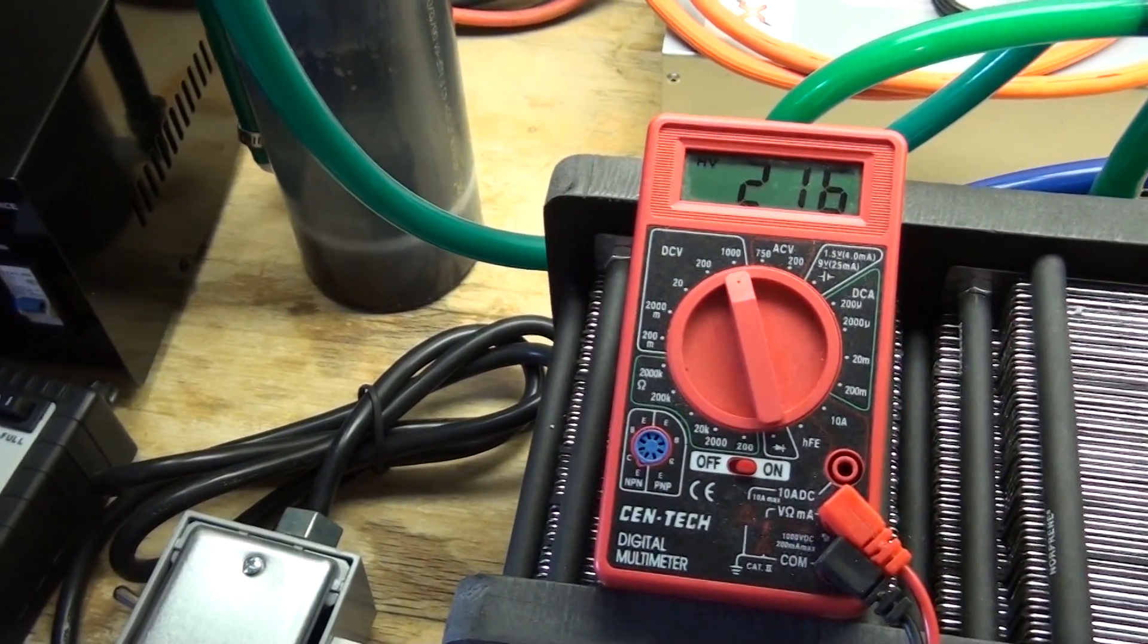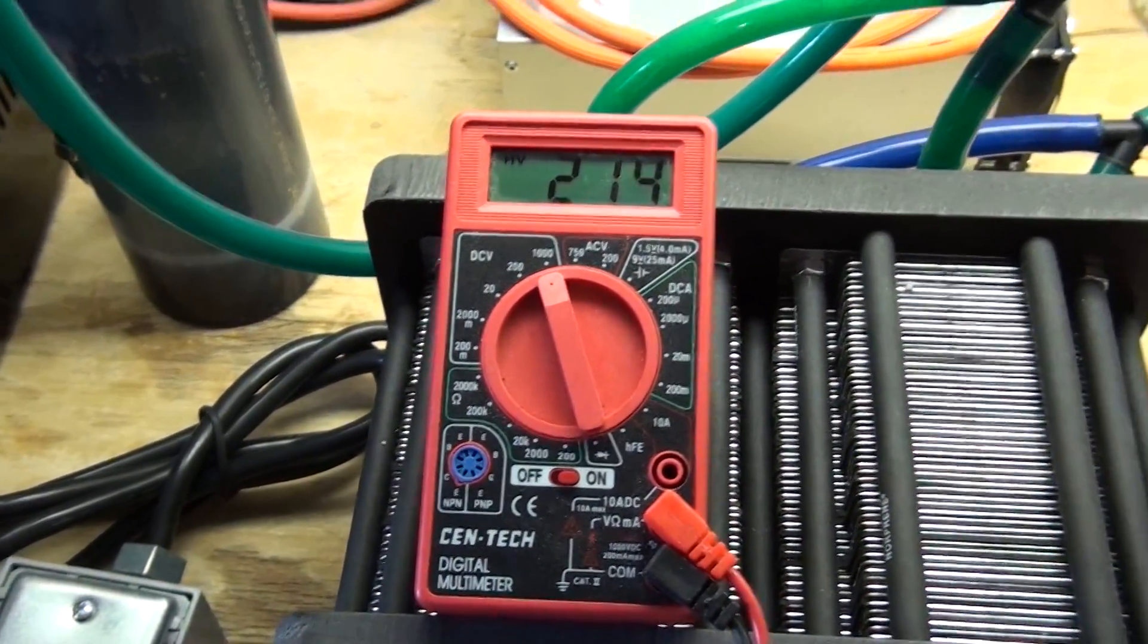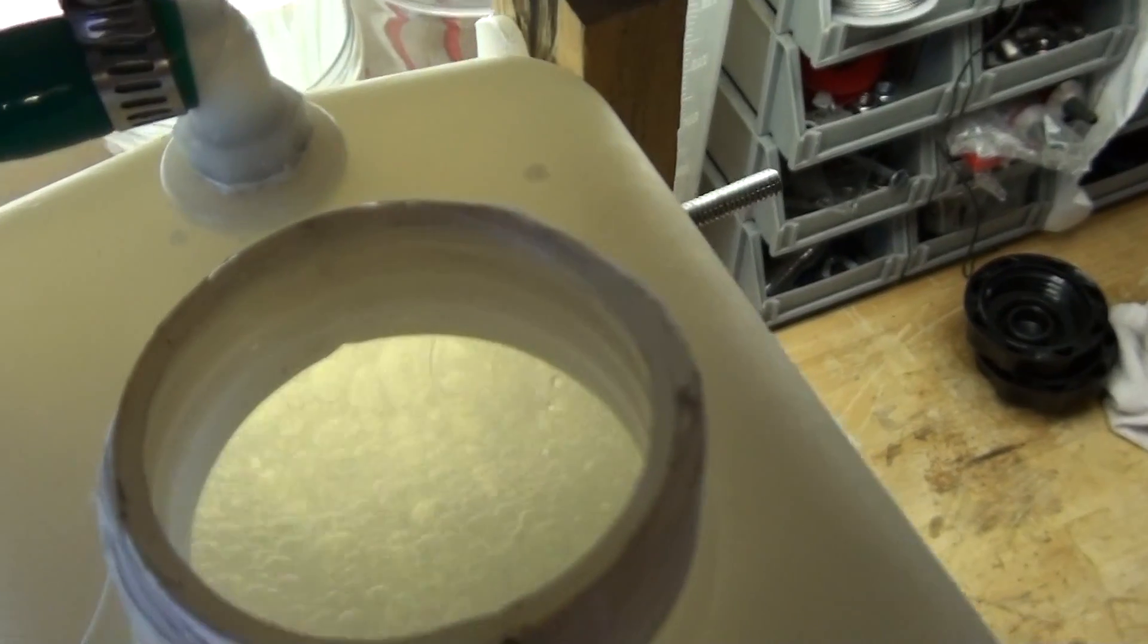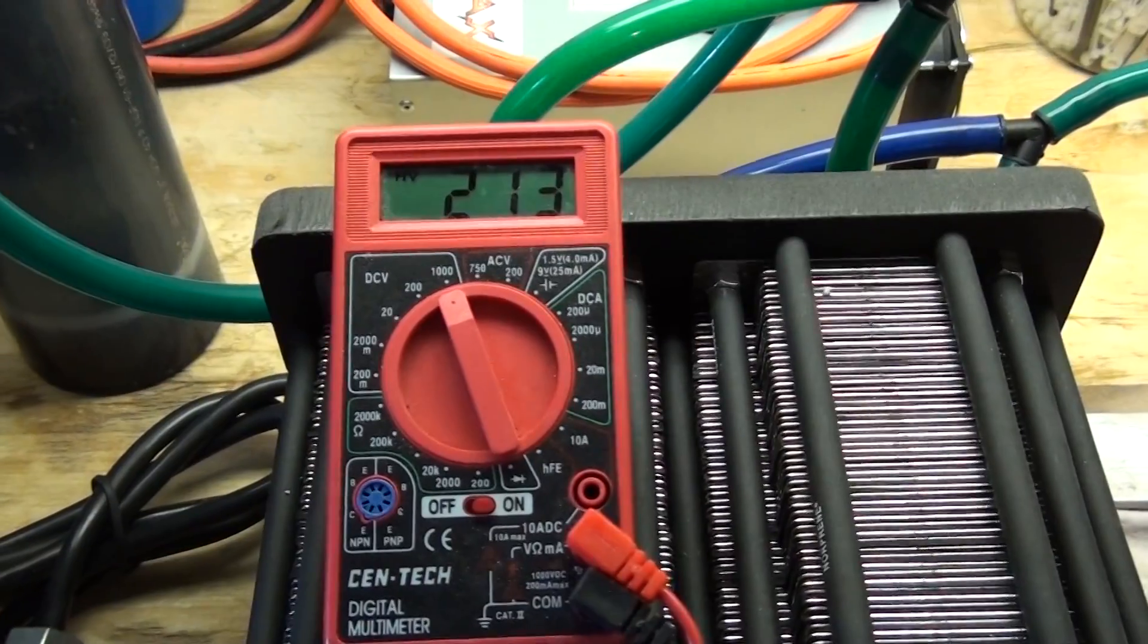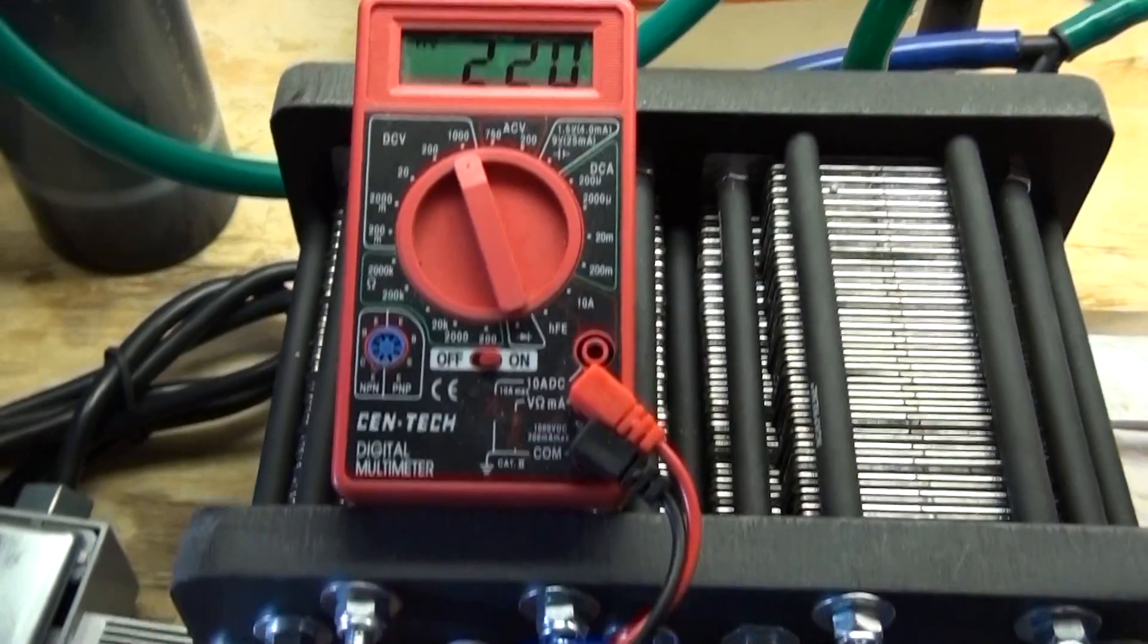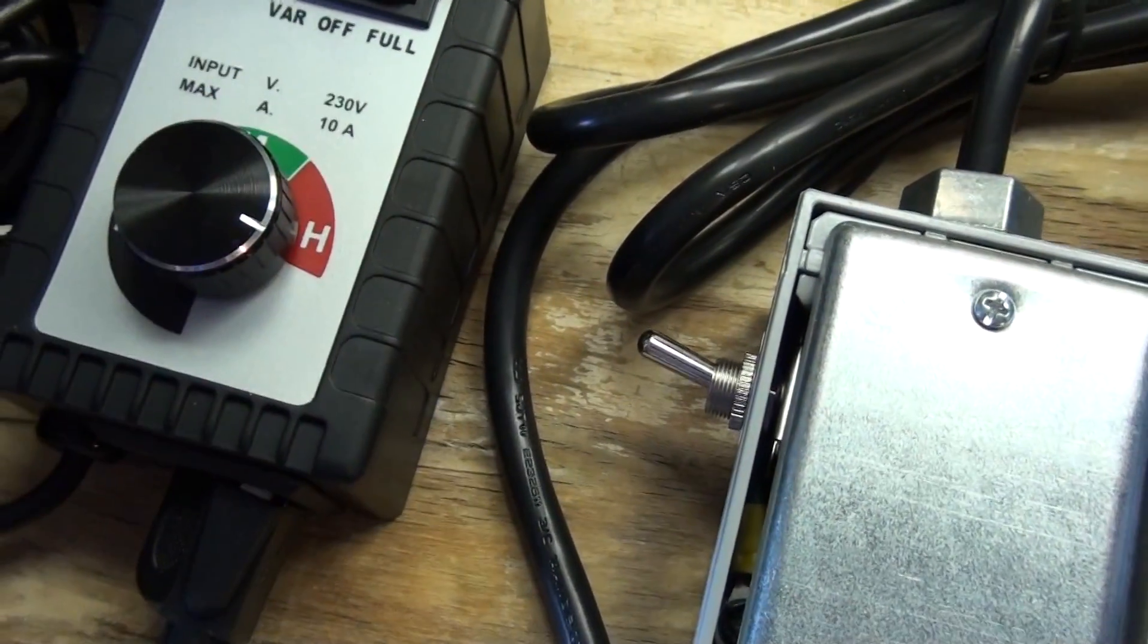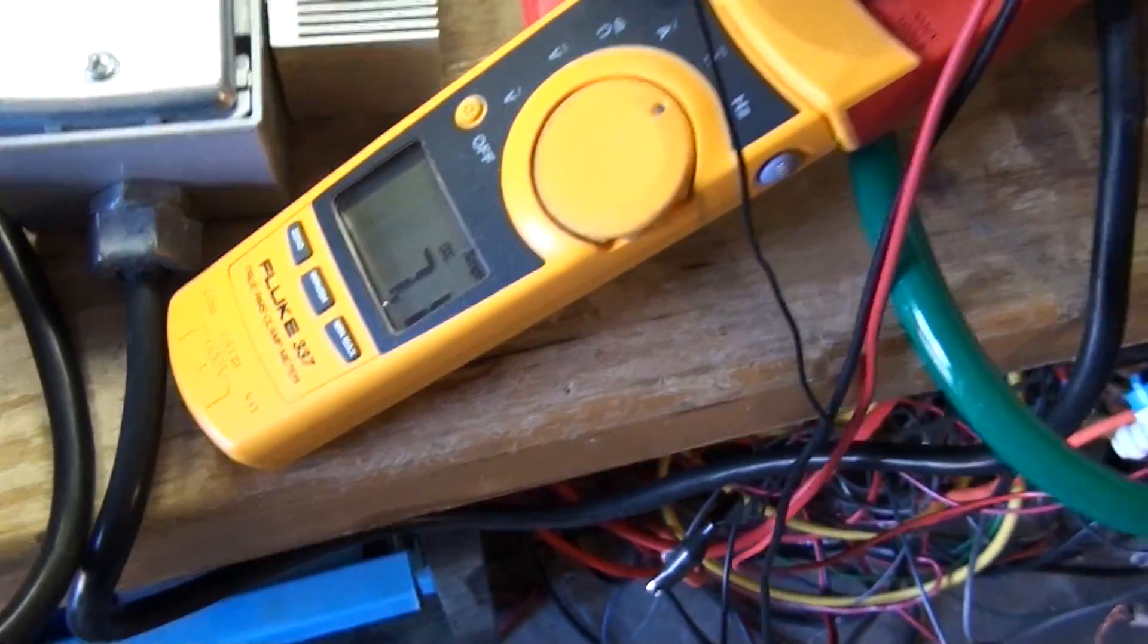So once we get close to 2 volts per plate, somewhere around 1.8 volts per plate, you can hear the production start there. I'll move it up to 220 volts. Right now you can see we're pulling about 7 amps, 7.2 amps. The maximum rating on this controller is 10 amps, and I'll show you how much production you get with just about 7 amps.